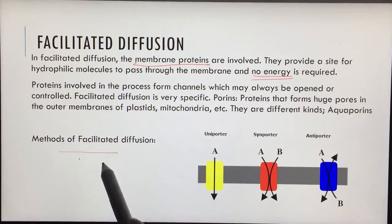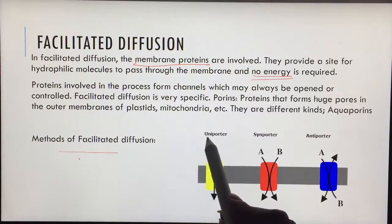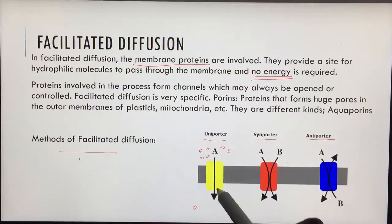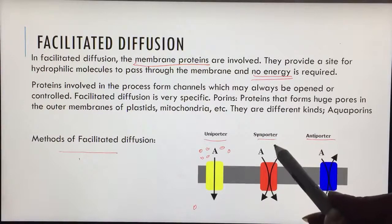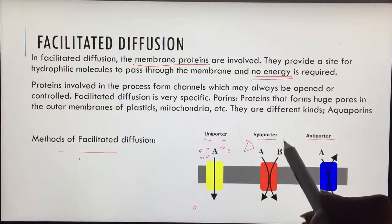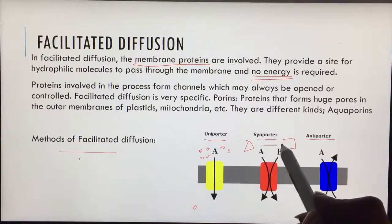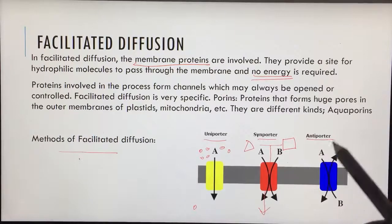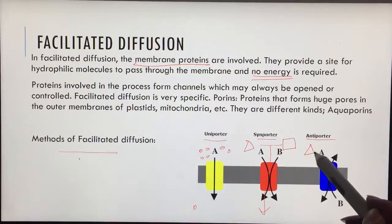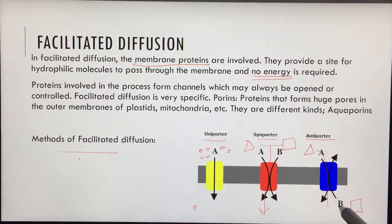The methods that are used in facilitated diffusion are three methods - uniport, symport, and antiport. In antiport, they go in opposite directions. If there is one triangle molecule present, it has to enter in the same direction for symport. But if it is clubbed with a square, then only the two can move in opposite directions. One can enter and one can leave.